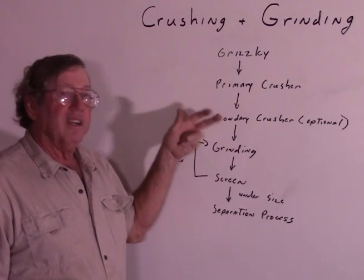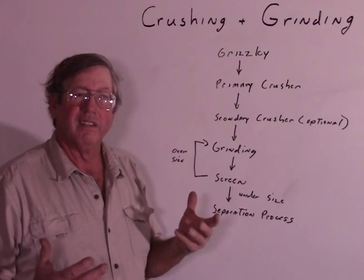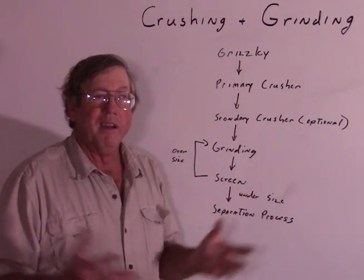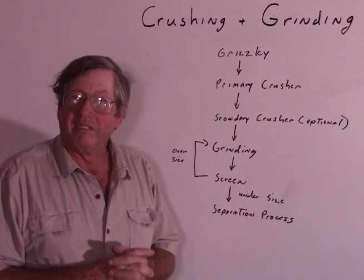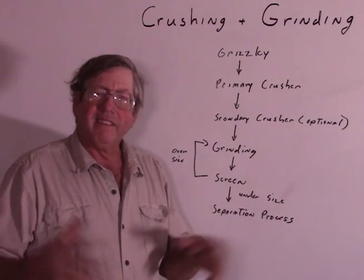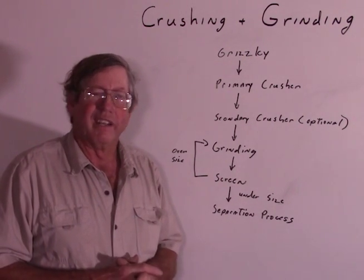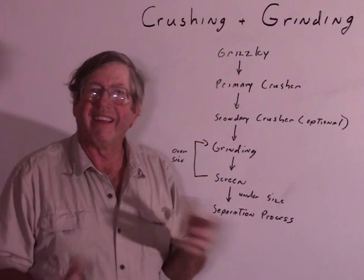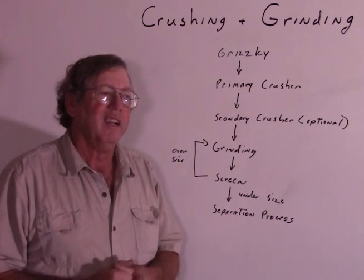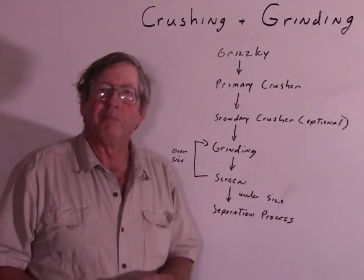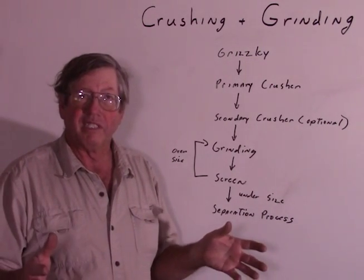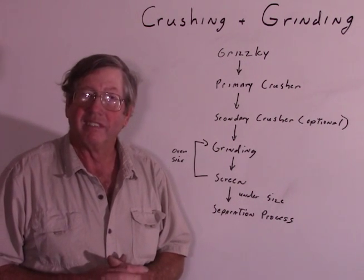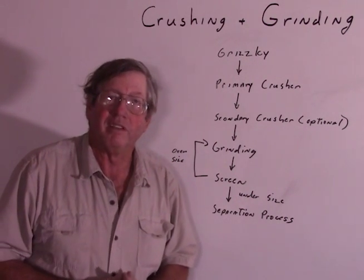The grinding circuit then crushes it to your final usable size. For example, if you're doing a flotation process it might be 80% 100-mesh minus or something like that. That phrase is used a lot: 80% means 80% of the material is on that side of the screen once you screen it. When I say 80% 100-mesh minus, it means you've got a 100-mesh screen and 80% of the material will go through it. 20% will be rejected — that would also be 20% 100-mesh plus.